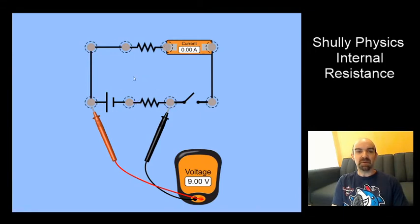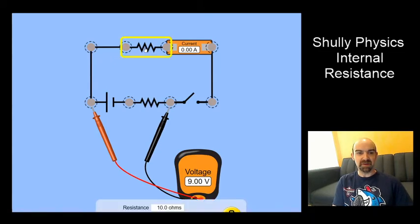And these two symbols down here are representing the battery. The battery is a combination of an EMF, an electromotive force, and an internal resistance. So this resistor down here is our internal resistance. This is the load resistance up here. I've got 10 ohms set for that load.